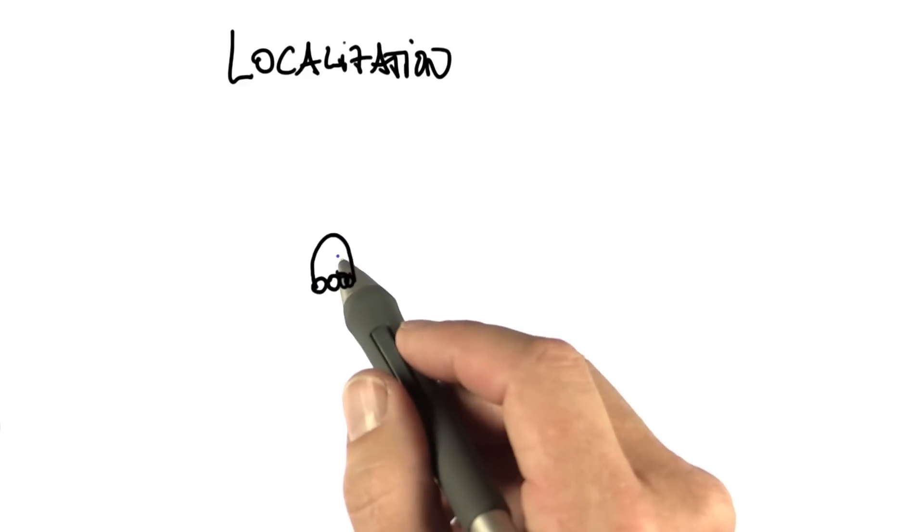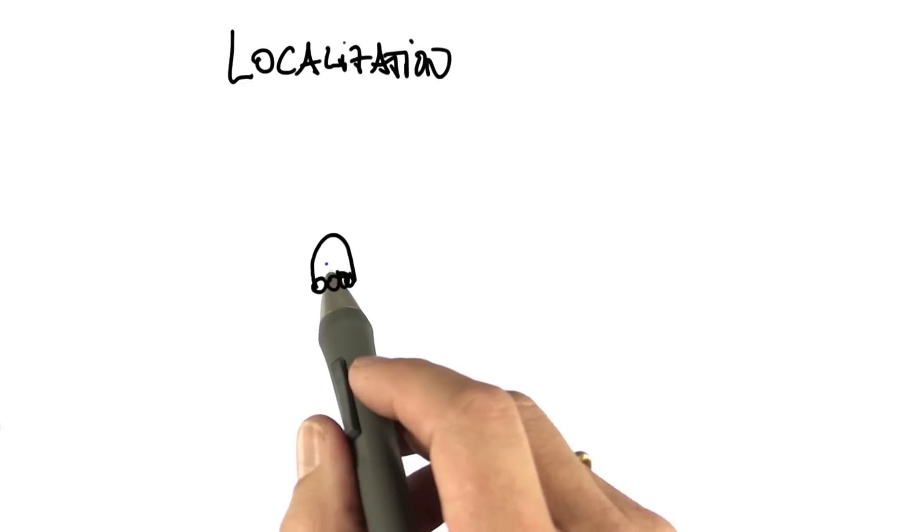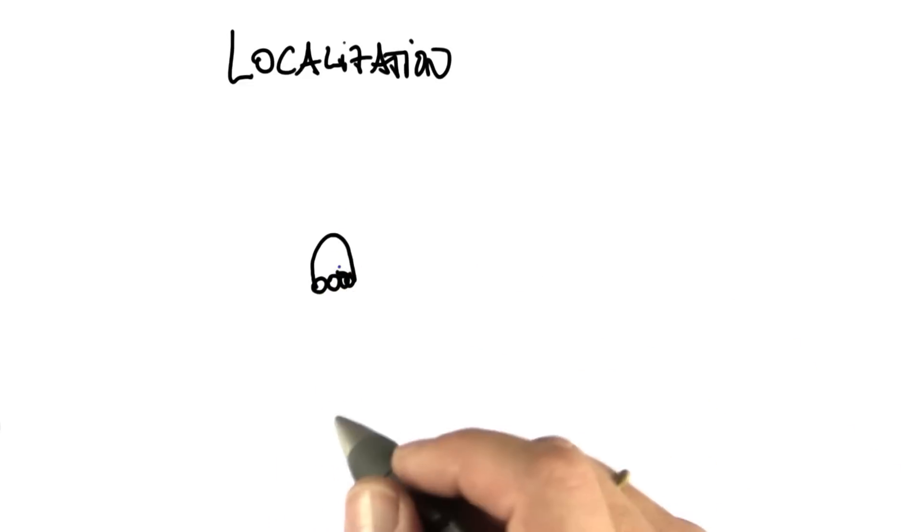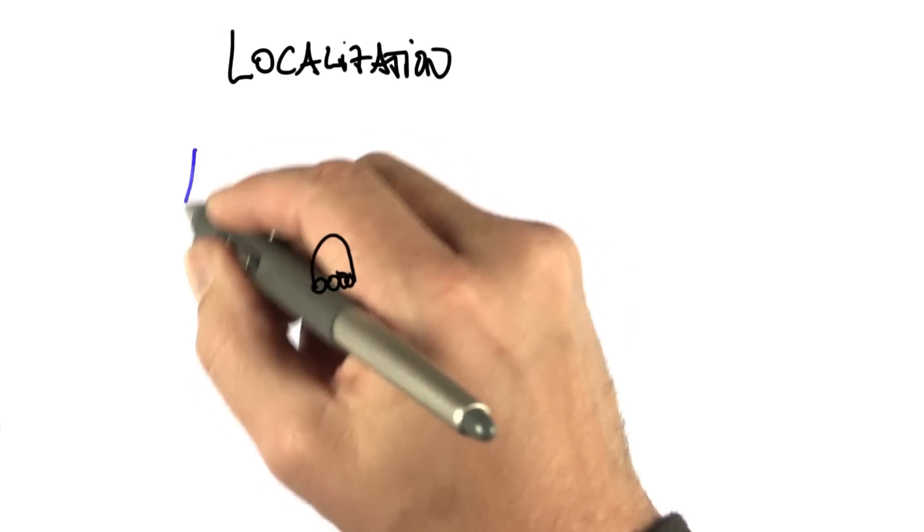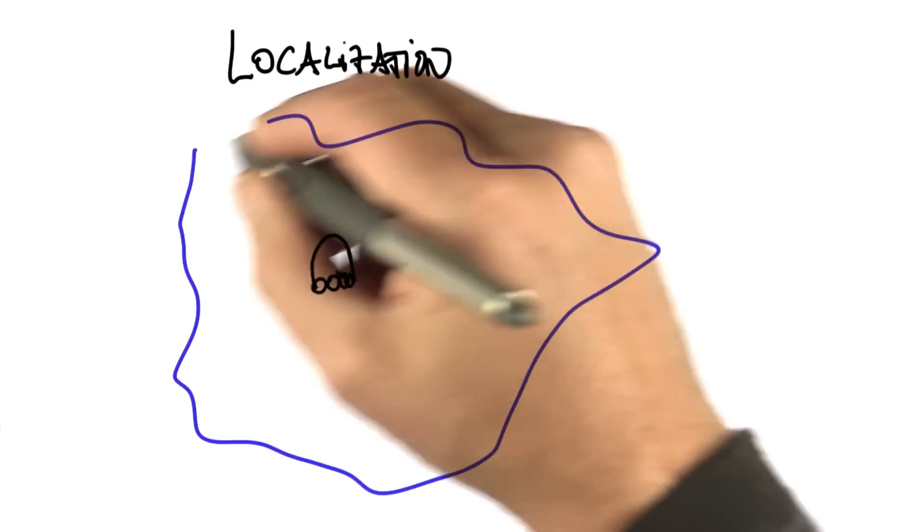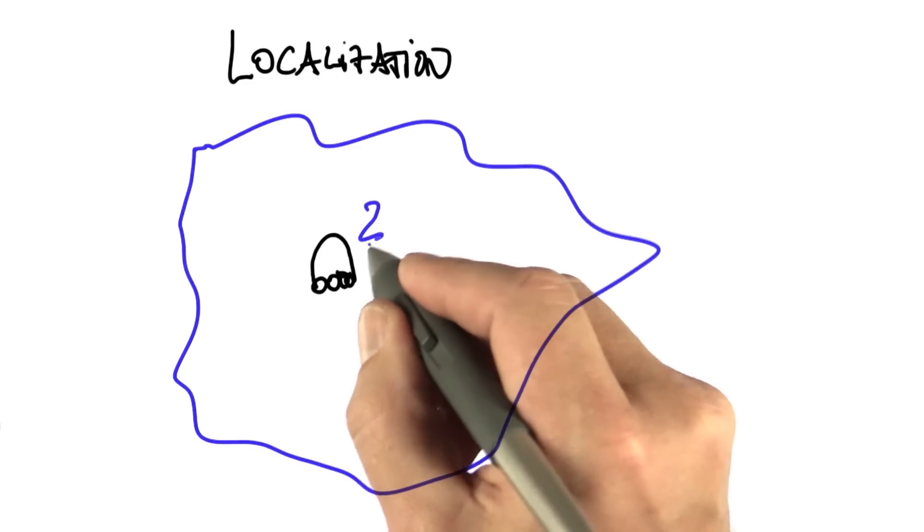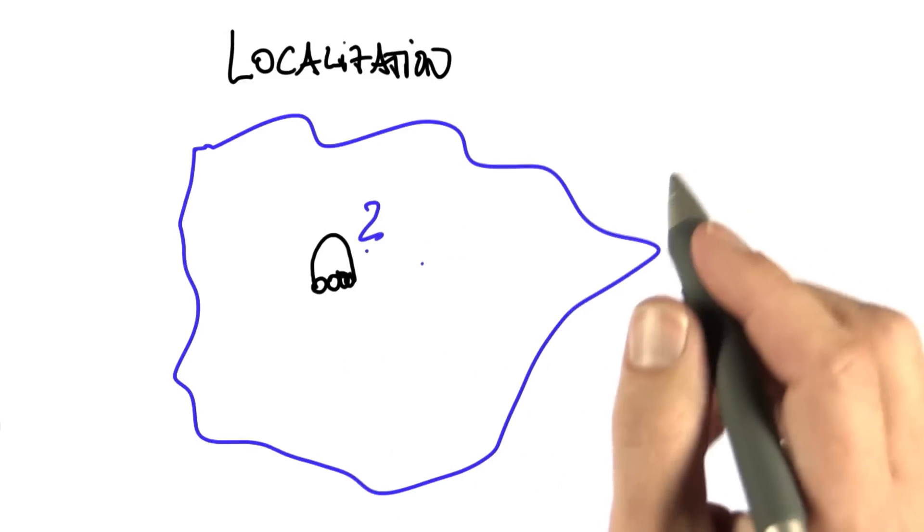The very first problem I'm trying to solve is called localization. It involves a robot that's lost in space. It could be a car, it could be a mobile robot. So here's his environment, and the poor robot has no clue where it is.